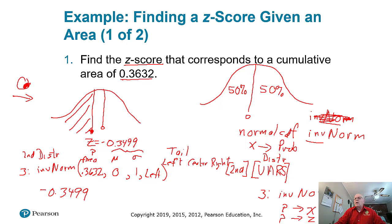Now, what if you have a TI-83? It's pretty simple. Because TI-83s always work from the left side, and this picture does indicate the left-hand side from negative infinity up to this point, we'll just put in 0.3632, 0, and 1, and we'll be done.